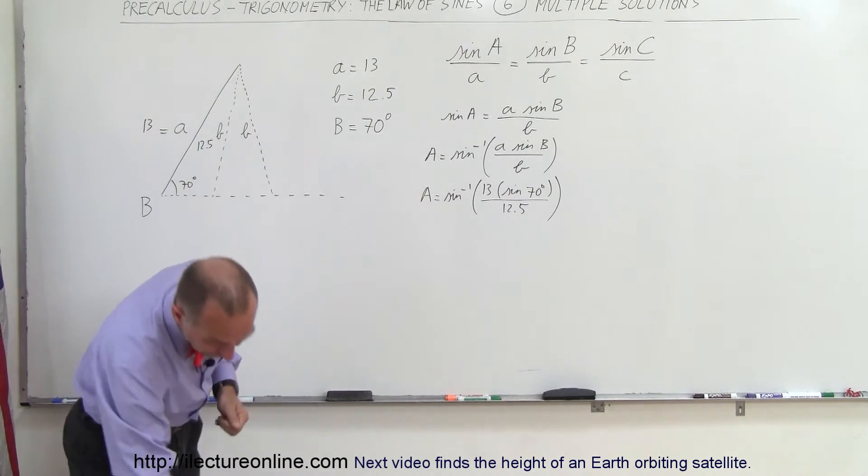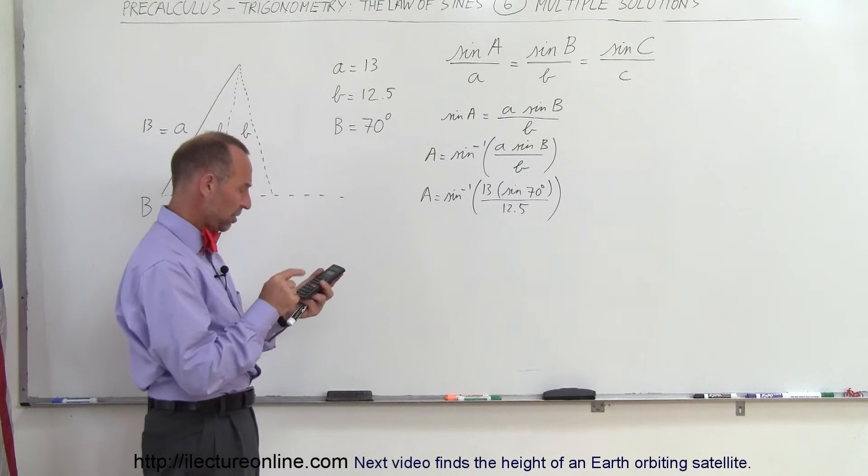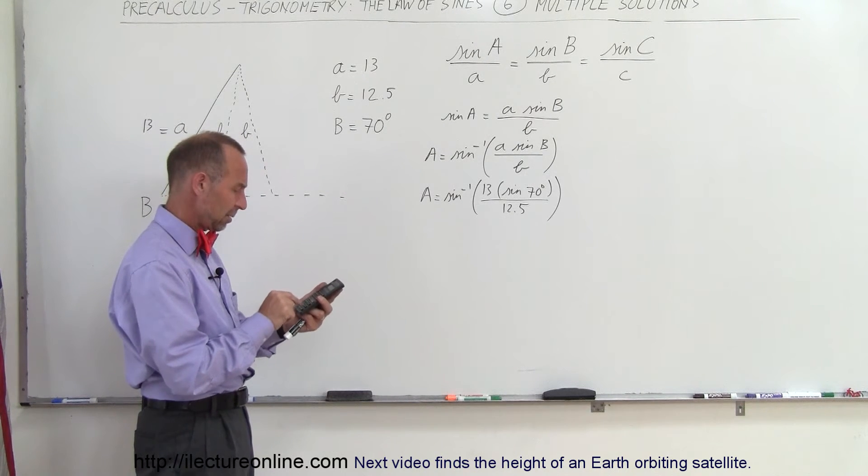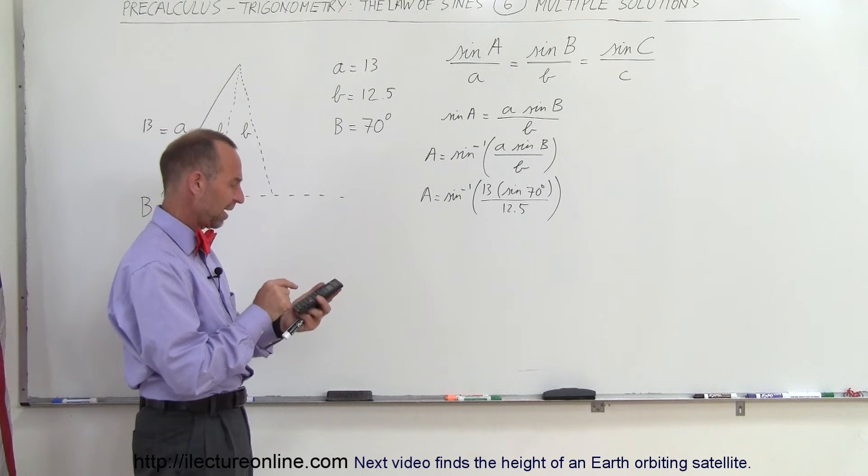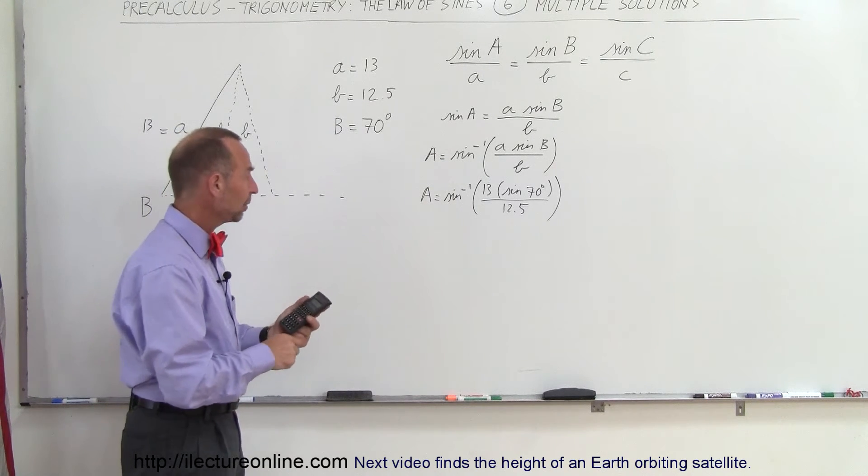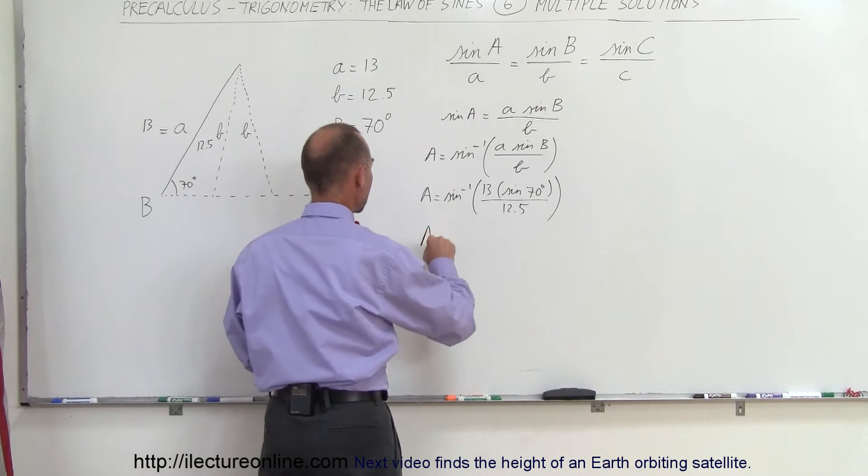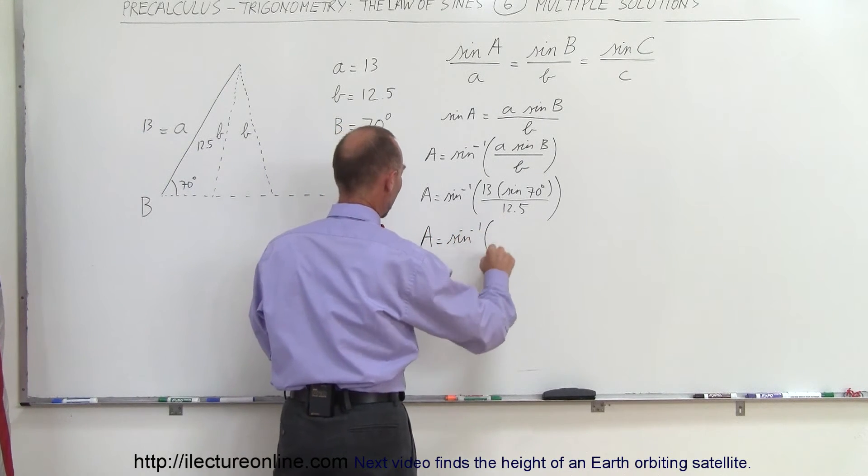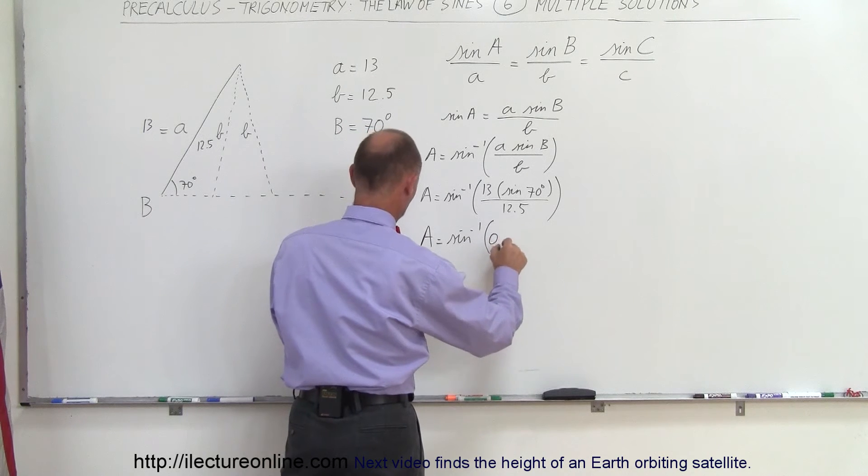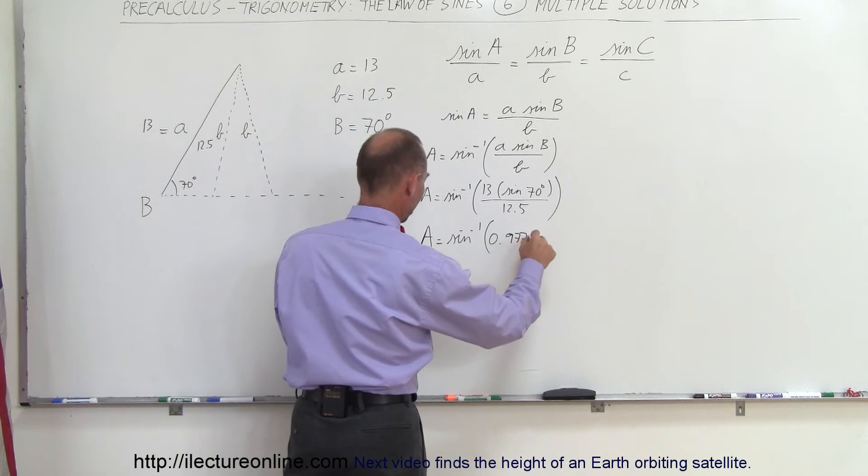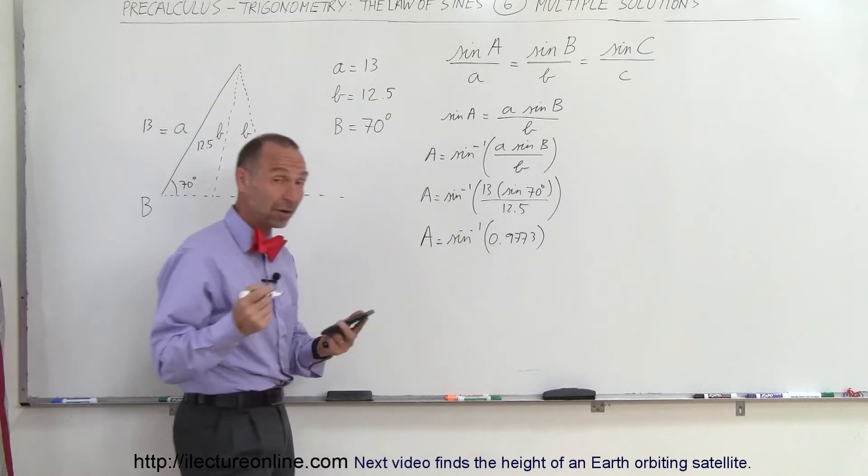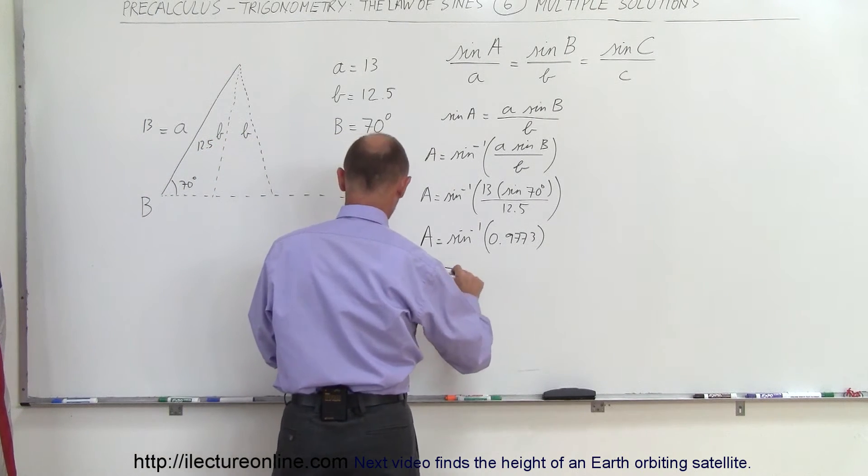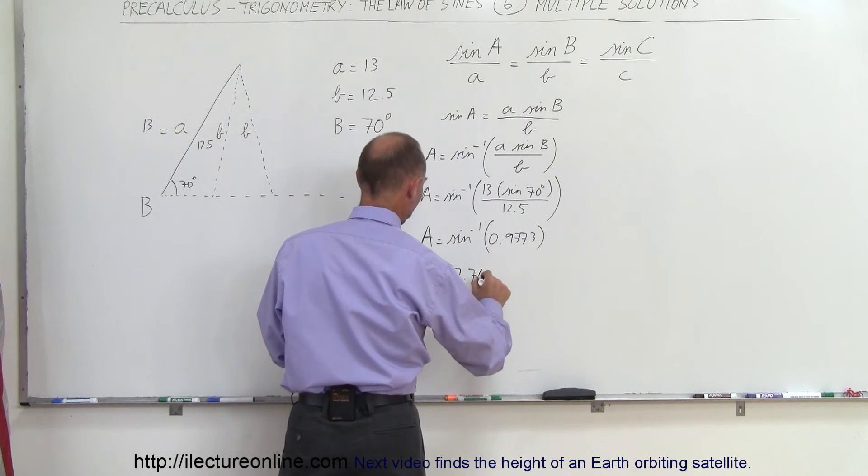If you plug it into your calculator, you get sine of 70 times 13 divided by 12.5, which gives you A equals the arc sine of 0.9773. Taking the arc sine of that, we get A equals 77.76 degrees.